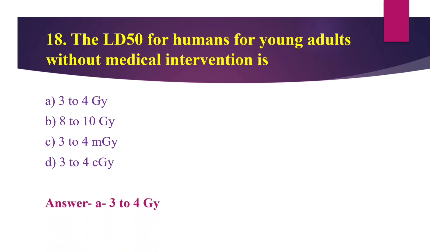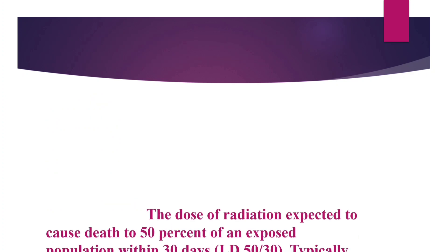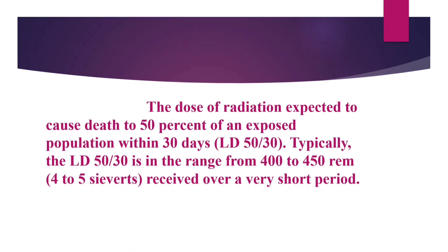The answer is option A, 3 to 4 gray. Now let's see the explanation. The dose of radiation expected to cause death to 50% of an exposed population within 30 days is LD50/30. Typically, the LD50/30 is in the range of 400 to 450 rem, that is 4 to 5 gray, received over a very short period.